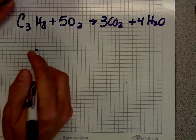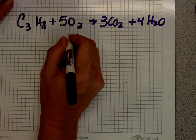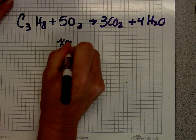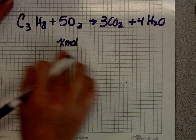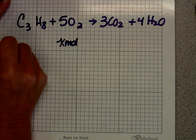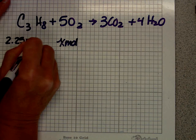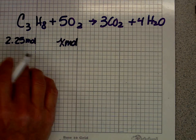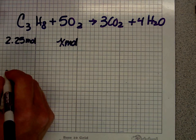The question is how many moles of oxygen are needed to completely react with 2.25 moles of C3H8? So I'm going to put an x mole underneath the oxygen. That's going to help clarify my thinking. That's an easy problem, I hope.